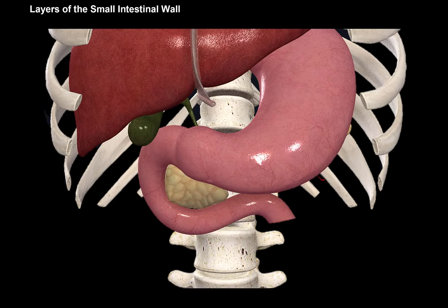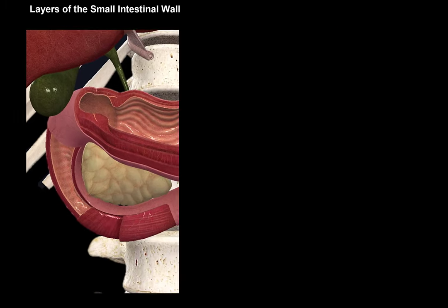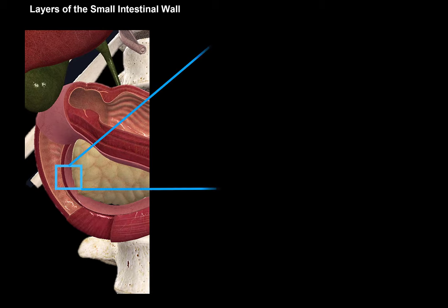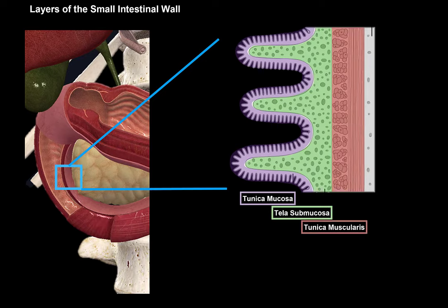Now let's go through the layers of the small intestinal wall. We'll open up a part of the small intestine and take a small section of the wall. The whole small intestine has more or less the same characteristics, except for some minor differences. You'll see the same general layers as the rest of the digestive system: the tunica mucosa, the tela submucosa, the tunica muscularis, and the tunica serosa. The tunica mucosa is always towards the lumen — meaning the GI tube's inner hollow opening. Let's go through each and look at some histology slides to differentiate between them.